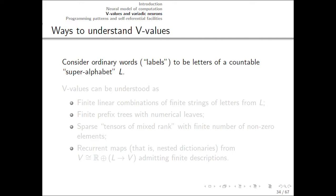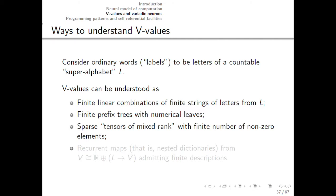So consider ordinary words to be letters of a countable superalphabet. And then look at the following equivalent ways to understand V-values. Finite linear combinations of finite strings of letters from the superalphabet. Finite prefix trees with numerical leaves. Sparse tensors of mixed rank. And then recurrent maps, where a V-value is a pair of a number and a map from labels to other V-values. And now we'll look at examples to see what this all means.